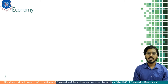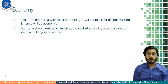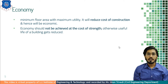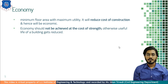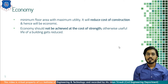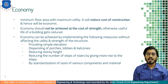The next building planning component is economy. How will you achieve economy — by compromising the strength and stability of a building, or by adopting poor quality material or poor workmanship in building construction? No, we cannot compromise the strength and stability, the material, and the workmanship which affect the lifespan of a building. So the building should have minimum floor area with maximum utility. It will reduce the cost of construction and hence there will be economy in construction. Economy should not be achieved at the cost of strength, otherwise the useful life of the building gets reduced.